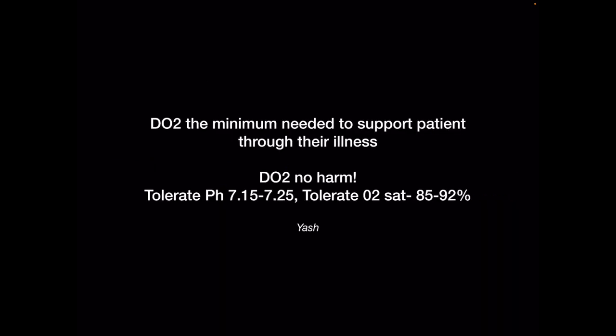As COPD and asthma patients improve, bronchoconstriction resolves and pH will improve on its own. Do the minimum needed to support the patient through their illness. Don't forget to tolerate a pH of even 7.15 and an oxygen saturation of 85% if anything you do to improve those numbers is decreasing cardiac output, increasing lung pressures, or increasing atelectrauma, barotrauma, or volutrauma. You are better off being comfortable with those numbers while the patient improves with your support. You don't control the patient — you support the patient.